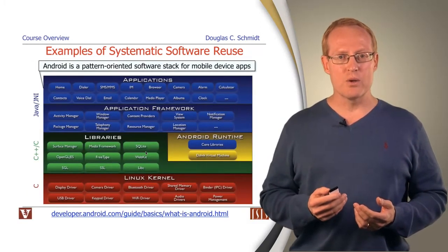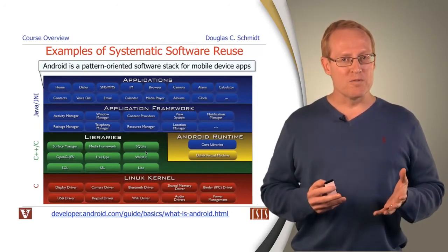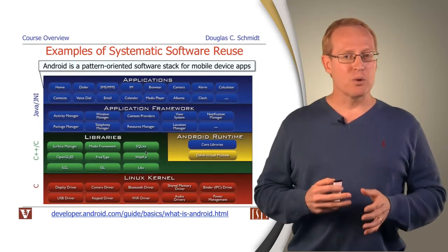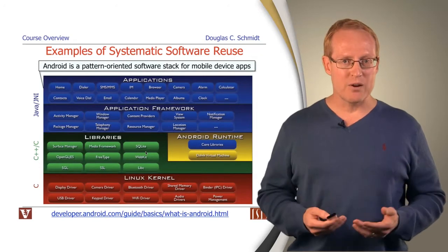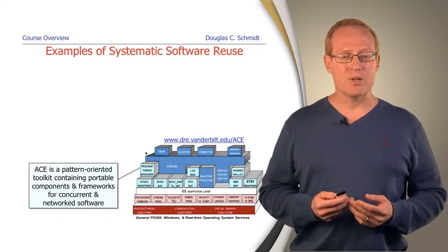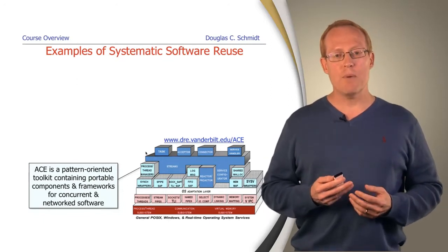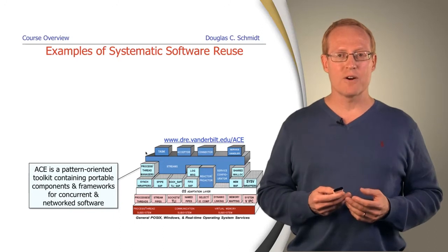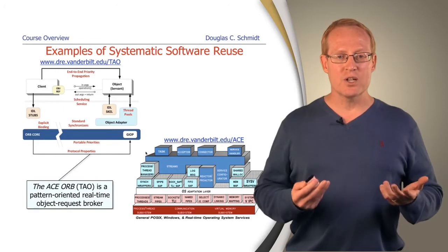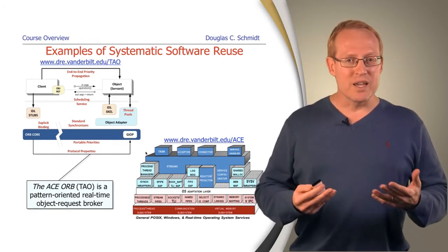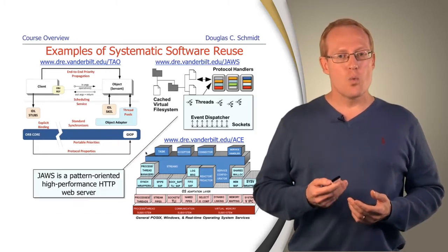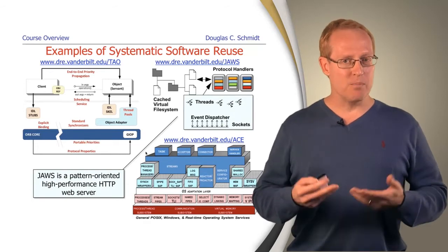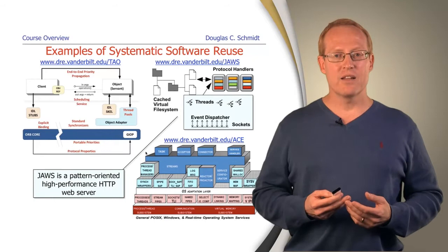Here are some examples of systematic software reuse we'll be focusing on in this course. One of the things we'll focus on is Android, which is a pattern-oriented software stack for mobile applications and reusable services. We'll also spend some time talking about the Adaptive Communication Environment, or ACE, which is a pattern-oriented toolkit that contains portable components and frameworks that are focused on the domains of concurrent and network software. We'll also talk about something called the ACE orb, which is an implementation of real-time object request brokers using many of the frameworks and portable components in ACE. We'll also talk about JAWS, which is a pattern-oriented high-performance HTTP web server that uses many of the parts of ACE, the patterns, the frameworks, and so on, in order to be able to interact using web communication.